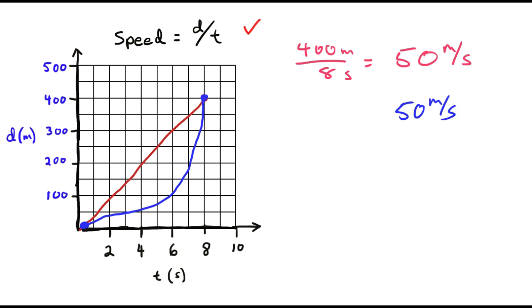If it went really fast and then slowed down. Then again, it would be 50 meters per second. And again, this would be average.